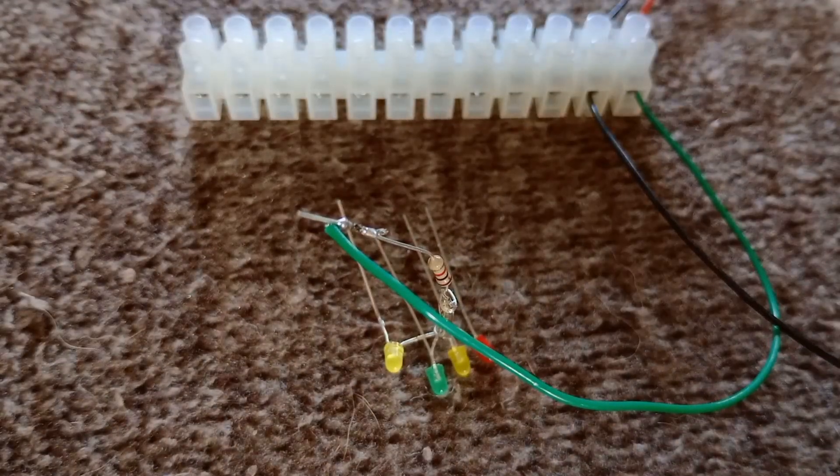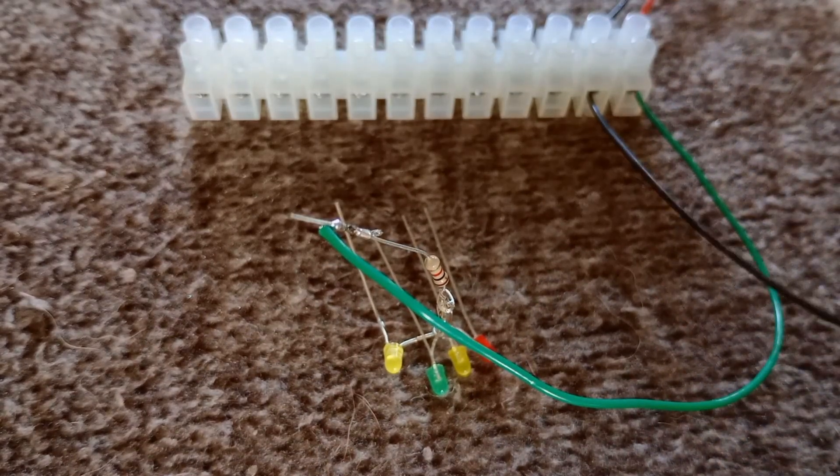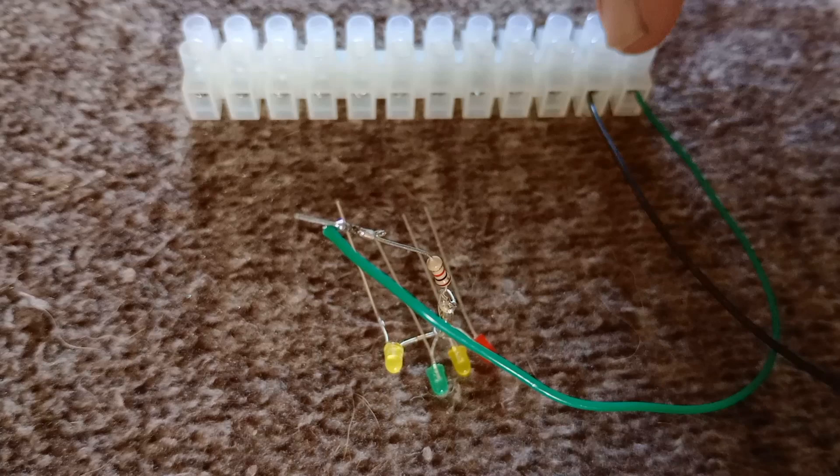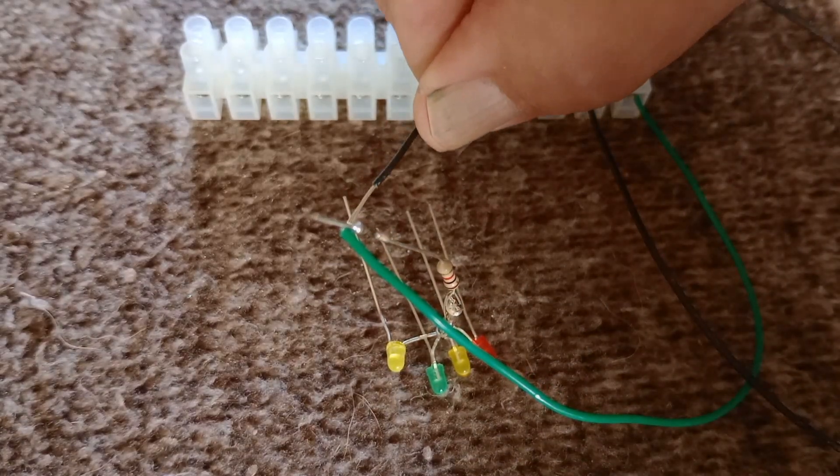This is the common positive signal. Its common leg is connected to positive. If we touch a wire from the negative to each of the short legs of the LEDs, the LED will light.